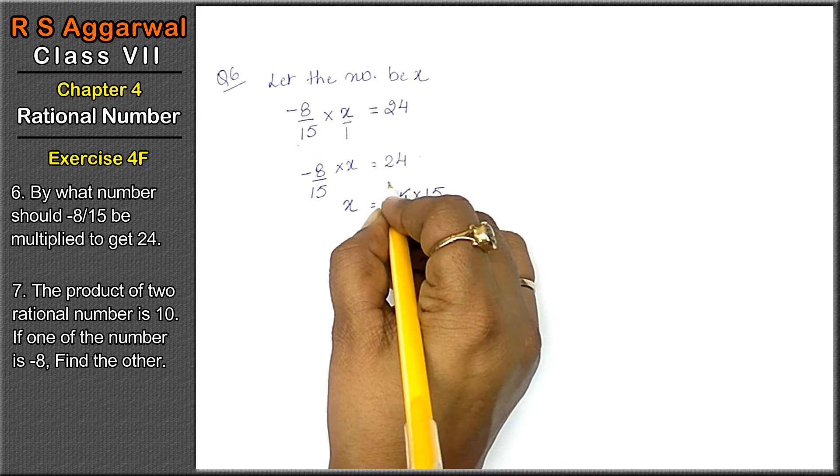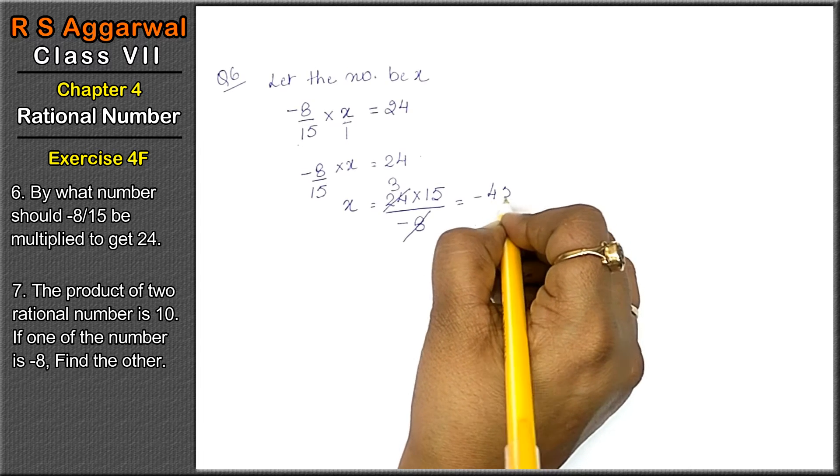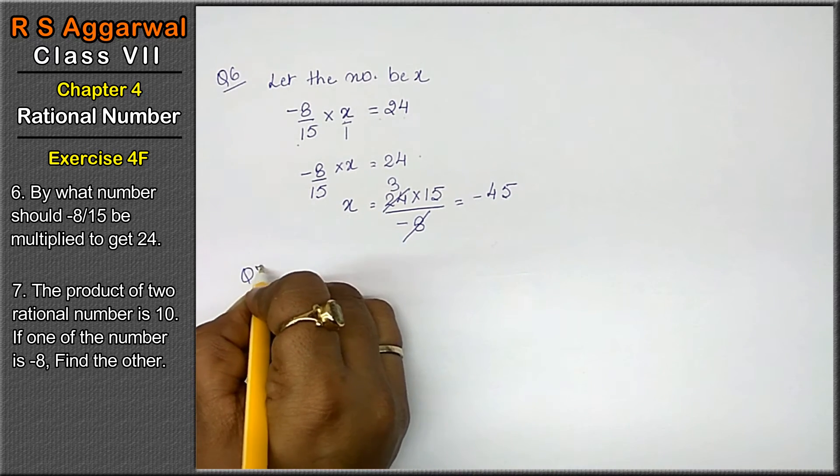8 ones are 8, 8 threes are 24. The answer is minus 45 is the answer. Let's do question number 7.